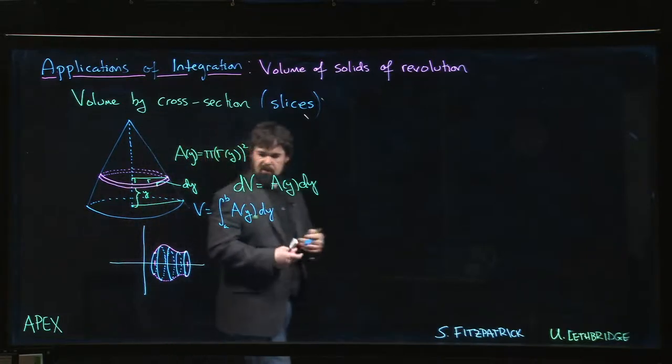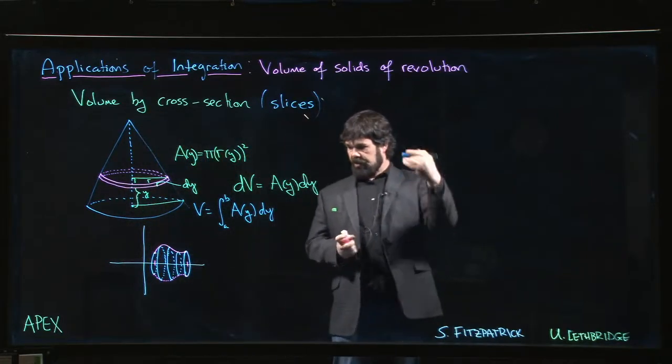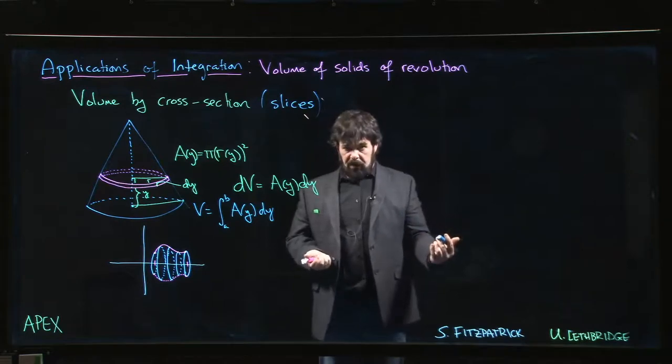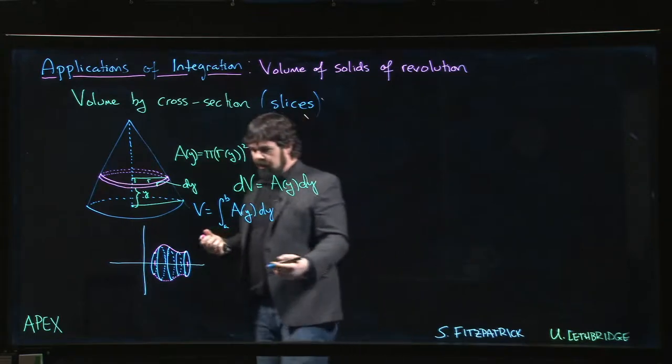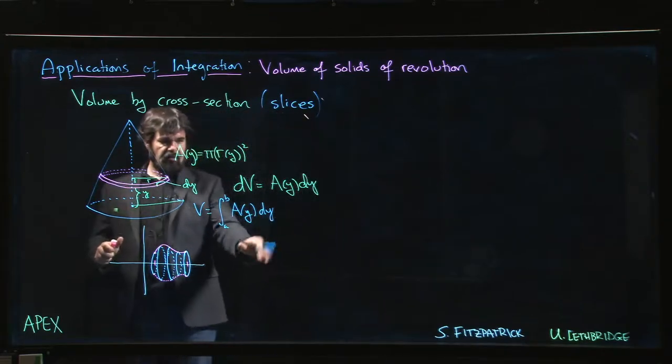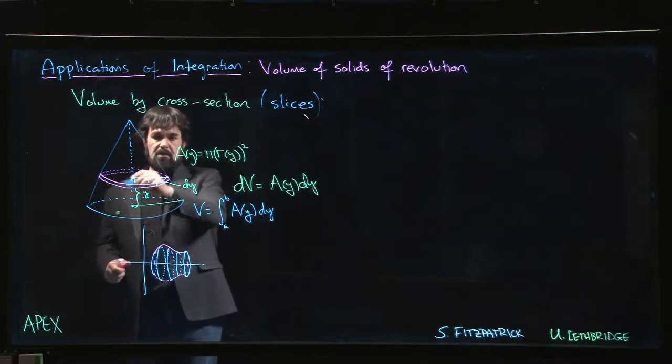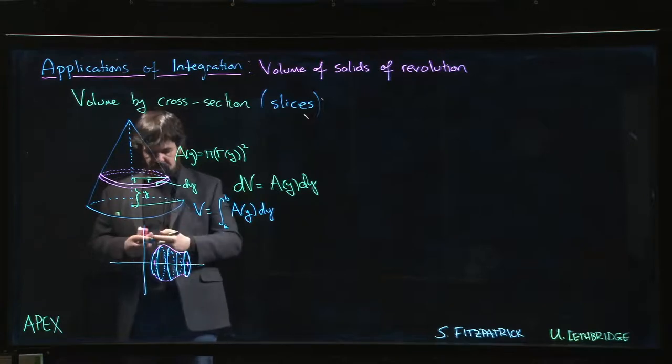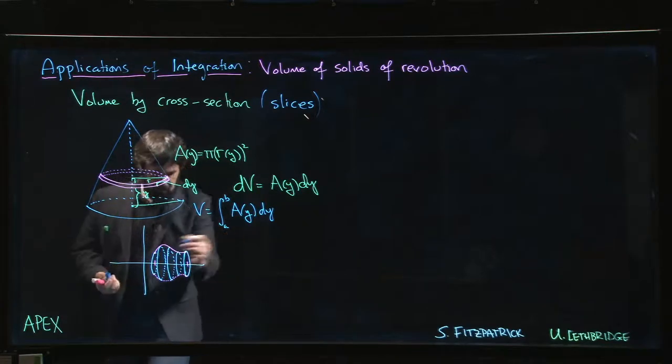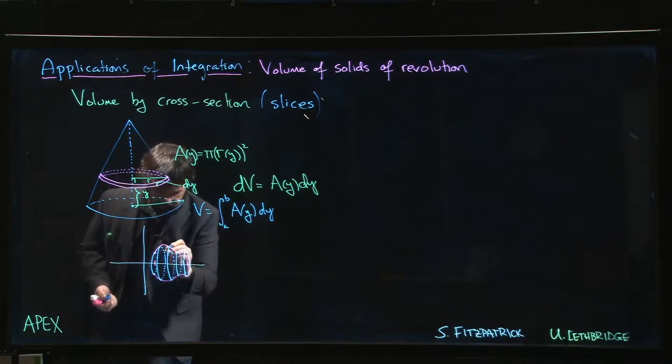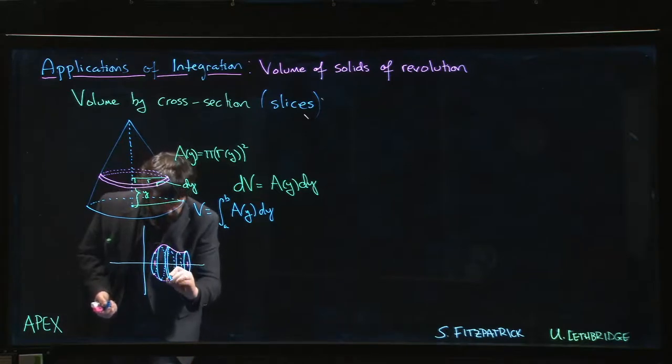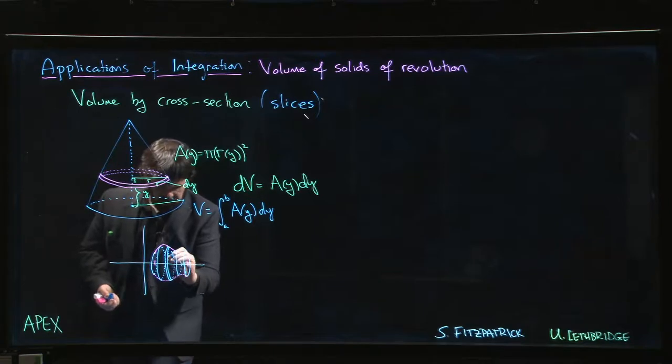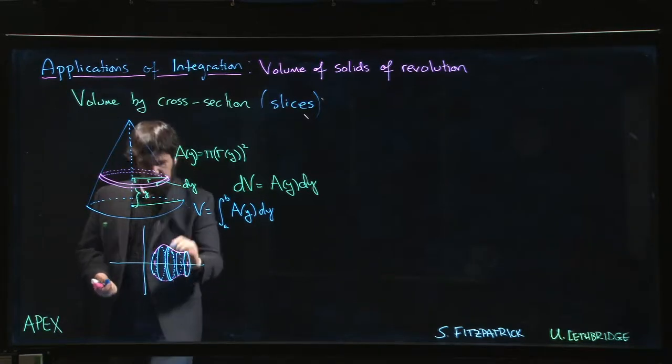You can picture this: you revolve the thing around, this generates some solid, and you want to calculate the volume. This is definitely a situation where you can apply exactly the slice method. The cross sections are circular—these discs. Any particular cross section we pick, you can imagine thickening it slightly, going around. The thickness is going to be essentially just dx.